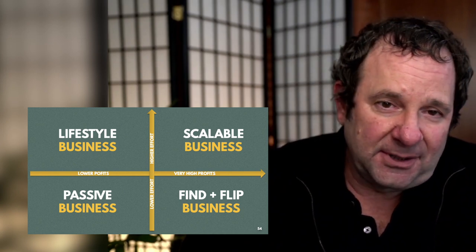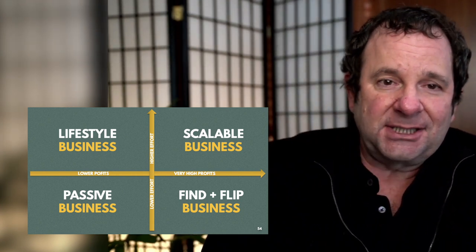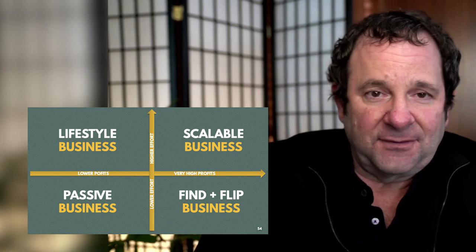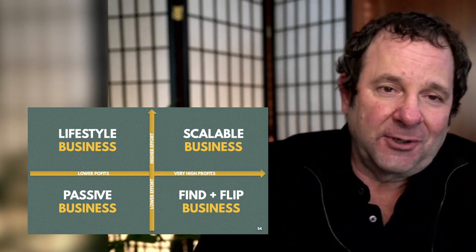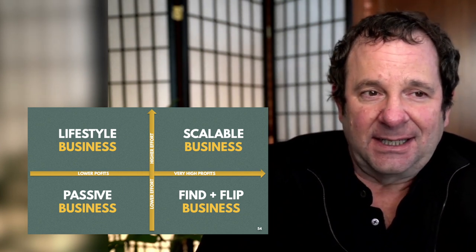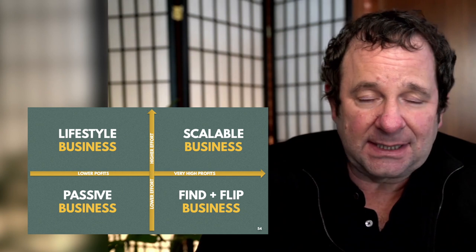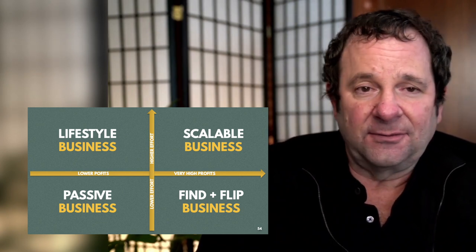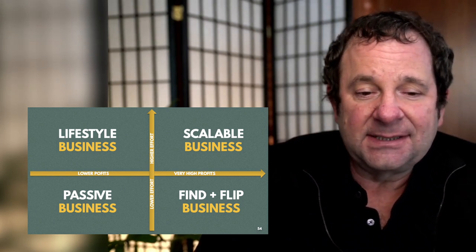Over in the upper left quadrant are lifestyle businesses. They have lower profits because we've made conscious decisions not to grow them aggressively. A lifestyle business is essentially a business that is pre-scale — for whatever reason, an artificial limitation has been placed on the business to maintain a very high quality of life, with less risk and less effort than aggressively growing it. You see a lot of lifestyle businesses generating somewhere between $100,000 and $3 million a year. When you get a little over $2 to $3 million a year in profits, you're really going to have to start scaling and bringing in management structures.